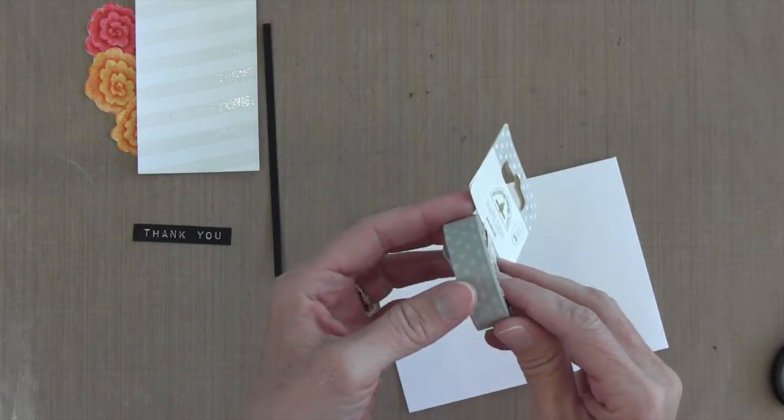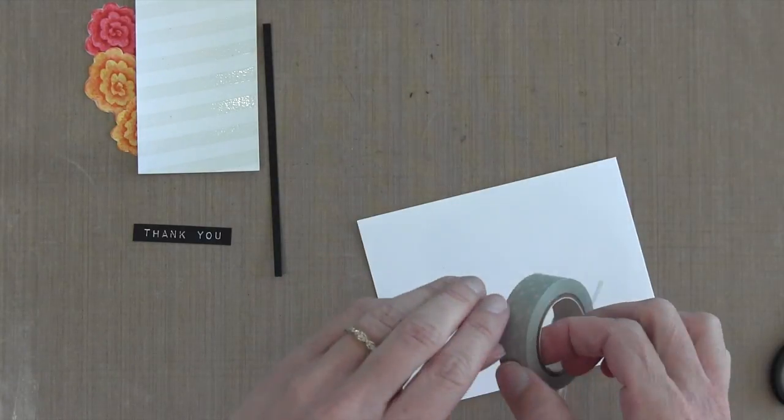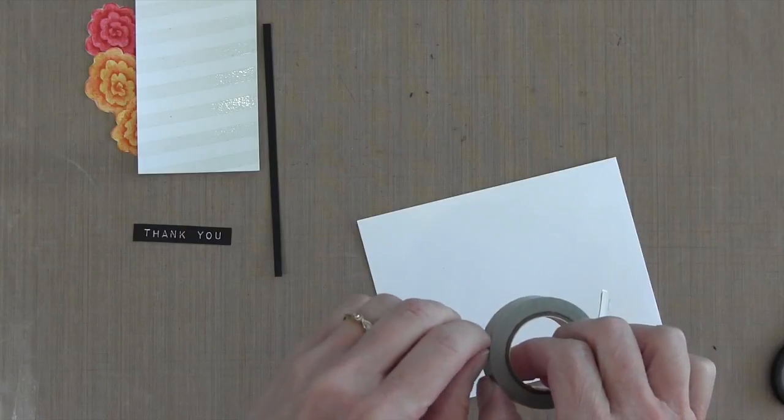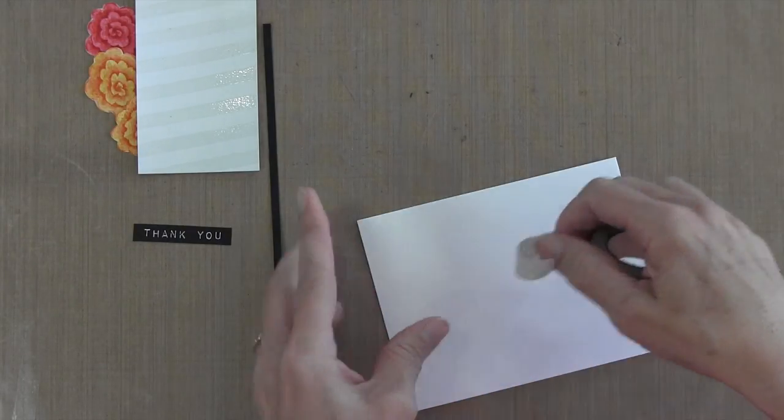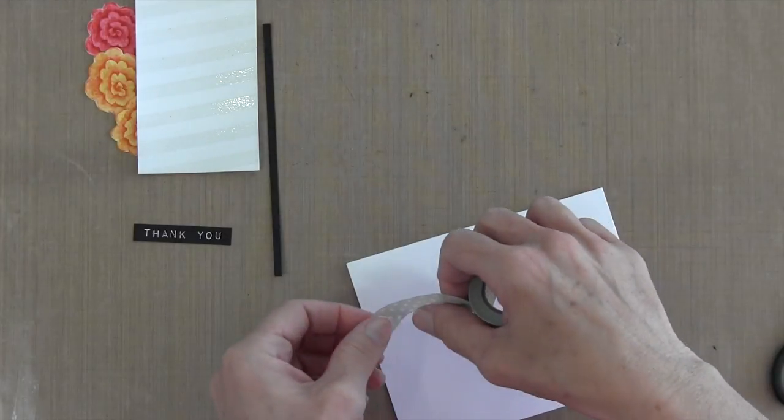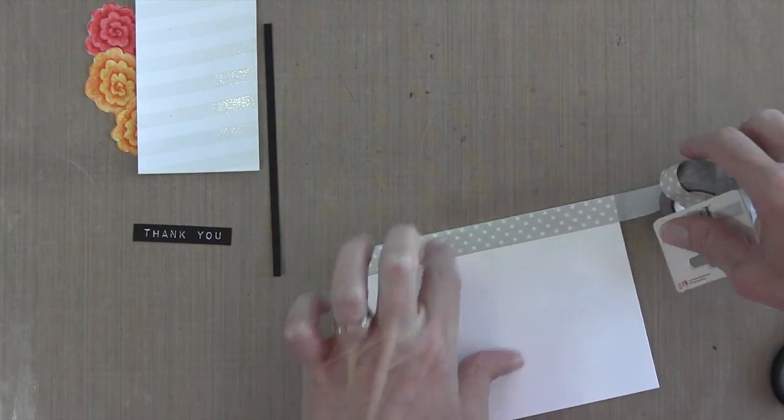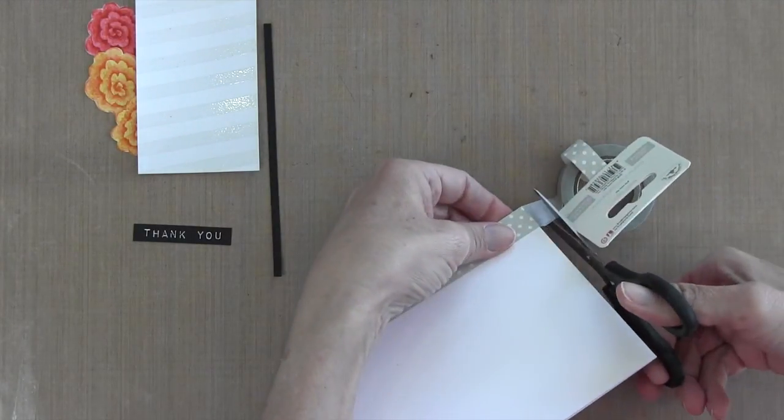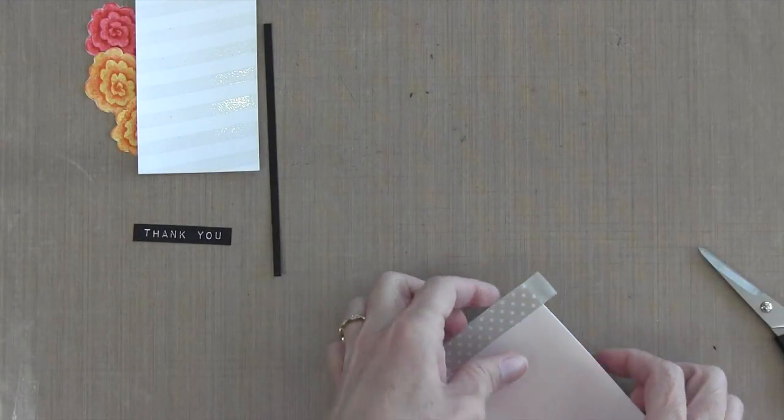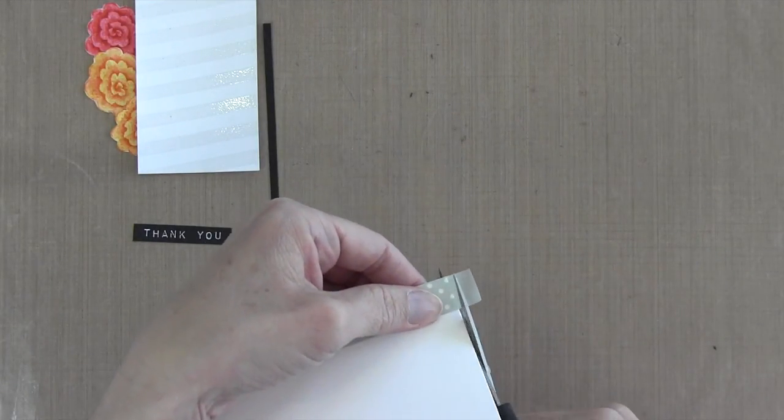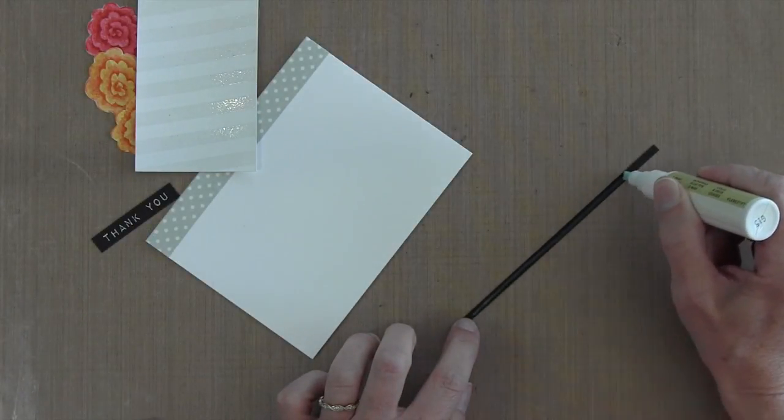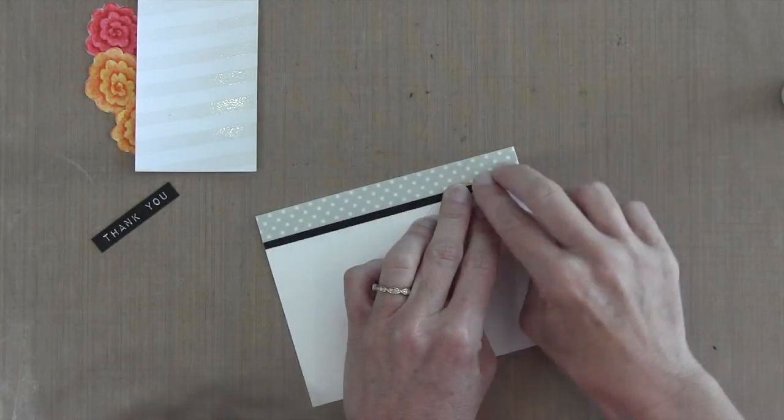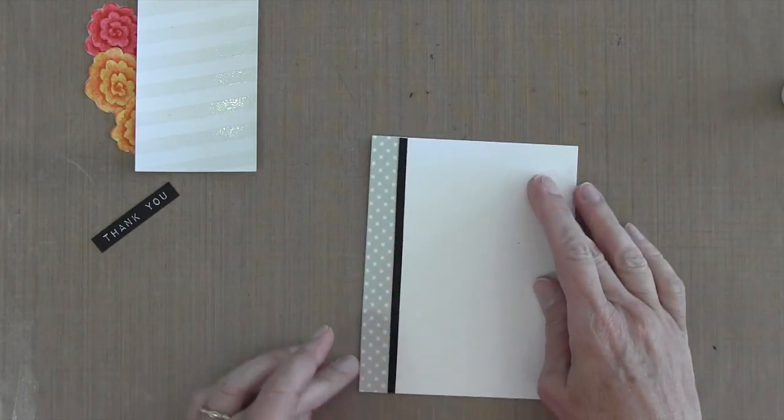I have this Doodlebug Washi Tape in Gray Swiss Dot. And Washi Tape is a great way to add an accent to your card without going through a lot of trouble with inking and stamping and all sorts of things like that. So I'm just going to pull it off the roll and put it right along the left edge. And then I just cut off the end since I can't really wrap it around because it's my card base.